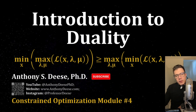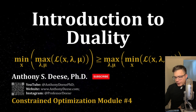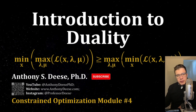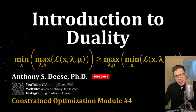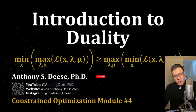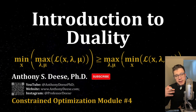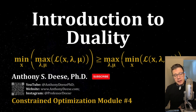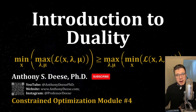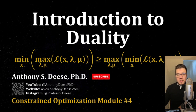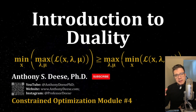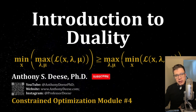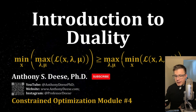Welcome. This is module number four from our series on constrained optimization. This one presents an introduction to duality. It's pretty short, probably only about 10 minutes long. I was going to combine this with the next module, number five, which actually deals with Lagrangian duality itself. However, that one's pretty long, probably closer to an hour. So this one provides an introduction to the theory, the derivation, and the examples that we're going to look at in the next.